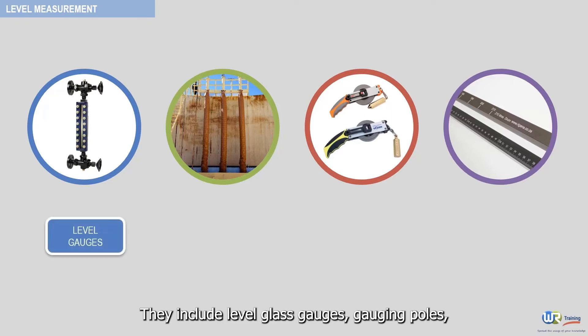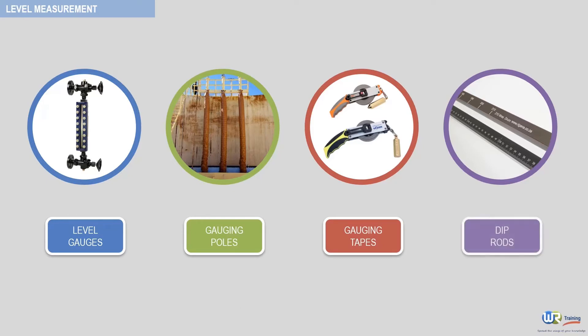They include level glass gauges, gauging poles, gauging tapes, and dip rods. In this video, we focus our attention on level glass gauges.